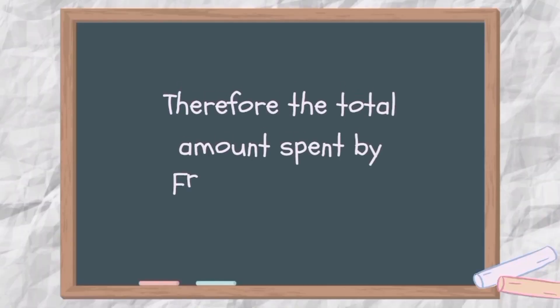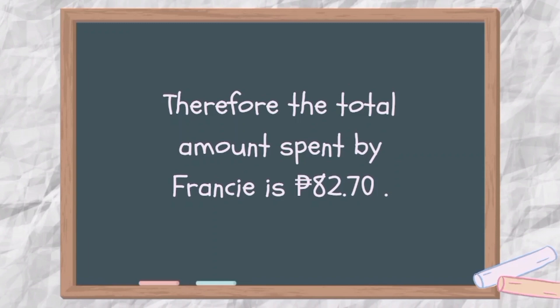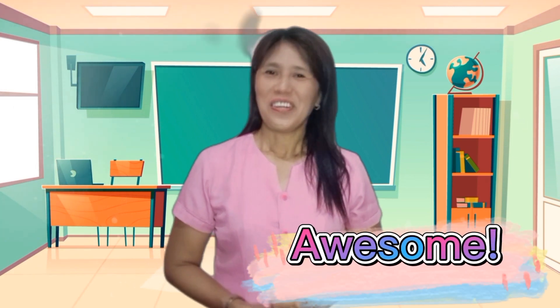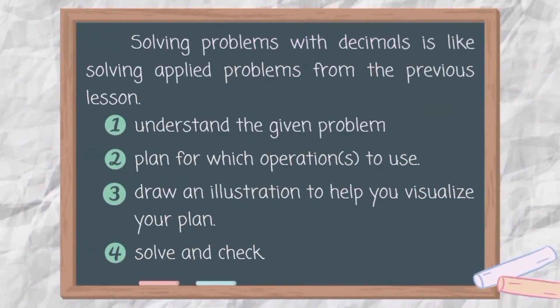Therefore, the total amount spent by Francie is 82 pesos and 70 centavos. Remember, that same process will be done in the subtraction of decimals. Today's lesson will focus on solving word problems. Solving problems with decimals is like solving applied problems from the previous lesson. We need to understand first the given problem and plan for which operation to use. You may draw an illustration to help you visualize your plan. Then solve and check.